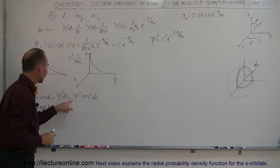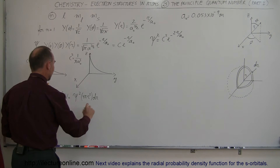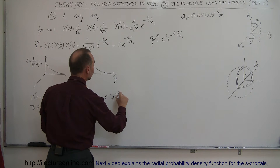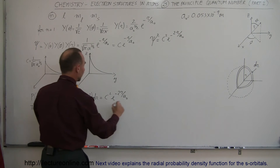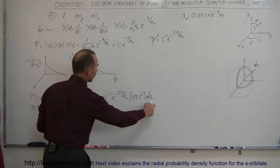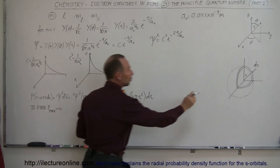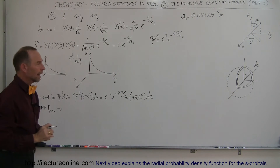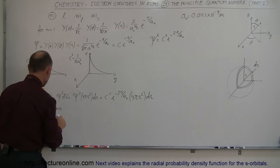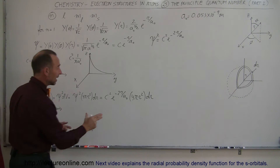What we're going to do is multiply this density function, which is equal to c squared times e to the minus 2r over a sub-naught, times 4πr² dr. That would be the probability of finding the electron in this little region of space around the nucleus. To find the most likely place, we're going to take the derivative of that — to find the maximum of anything, you take the derivative and set it equal to zero.